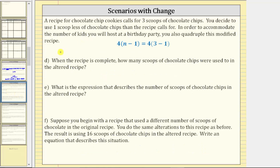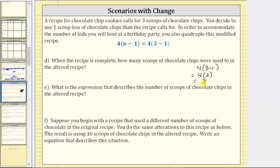For part D, I've copied the last equation here in blue. When the recipe is complete, how many scoops of chocolate chips were used in the altered recipe? This equation represents the two alterations to the original recipe, and tells us the expression on the left is equivalent to the expression on the right. To determine the number of scoops used, we evaluate the right side: four times the quantity three minus one. Following the order of operations, we simplify inside the parentheses first: four times two equals eight. So the altered recipe used eight scoops of chocolate chips.